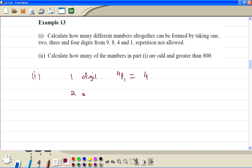If we choose 2 digits, so 4p2 is 12. 3 digits, 4p3 is 24. 4 digits is 4p4. And we get the total 64 different numbers.